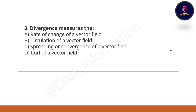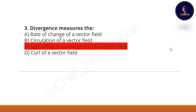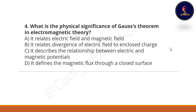Third question: divergence measures what? Option A: rate of change of a vector field. Option B: circulation of a vector field. Option C: spreading or convergence of a vector field. Option D: curl of a vector field. The correct option is C — spreading or convergence of a vector field.